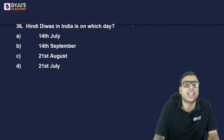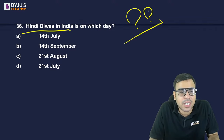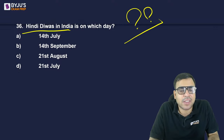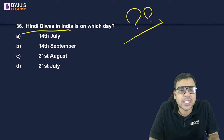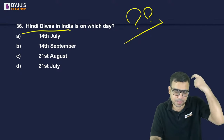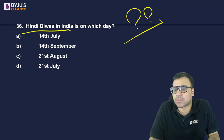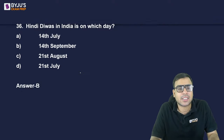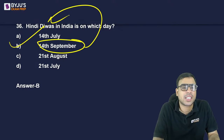Hindi Diwas — on which day is it celebrated? 14th July, 14th September, 21st August, or 21st July? The right answer is 14th September — B. Everyone should know this.